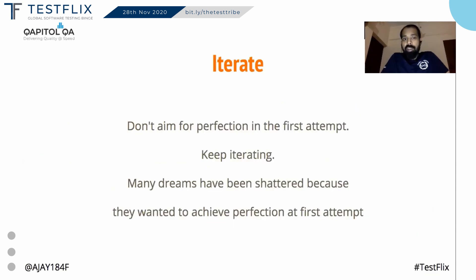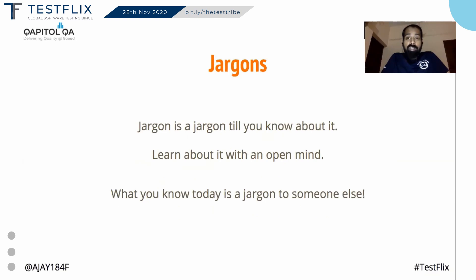I for Iterate. Waiting for perfection is one of the main causes of so many projects not taking off — don't give that excuse. J for Jargon. Jargon is just jargon until you know it.